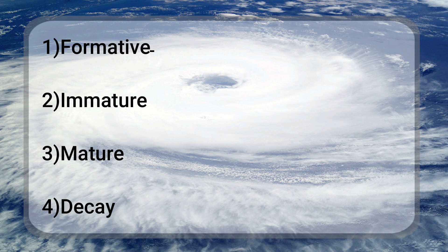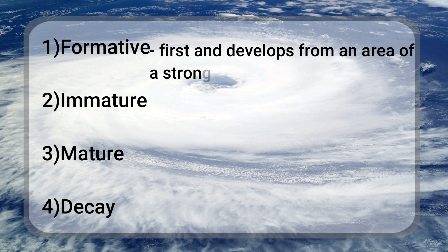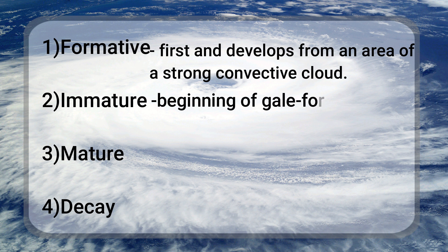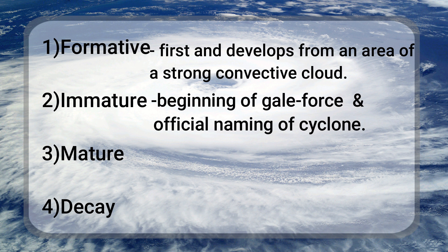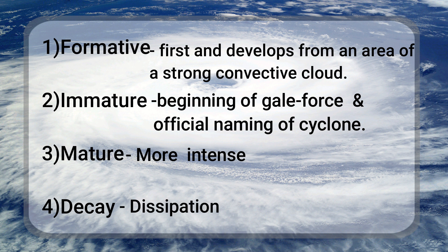The formative stage is the first and develops from an area of strong convective cloud. Stage 2 sees the beginning of gale force winds and official naming of the cyclone. Stage 3 is when the cyclone is at its most intense. The decay stage is the final stage, where the cyclone continues progress over cooler water or land until it dissipates.